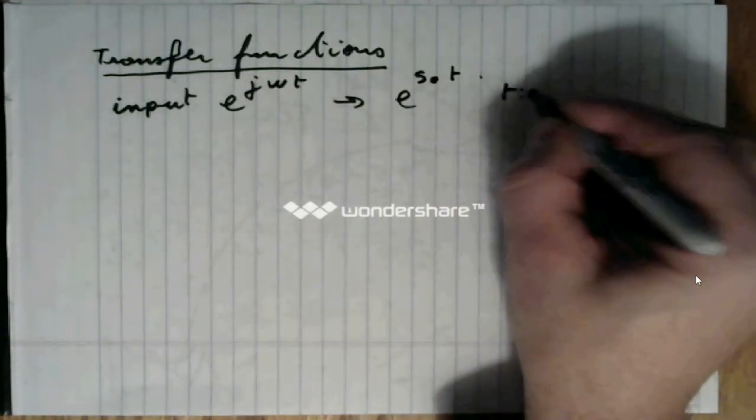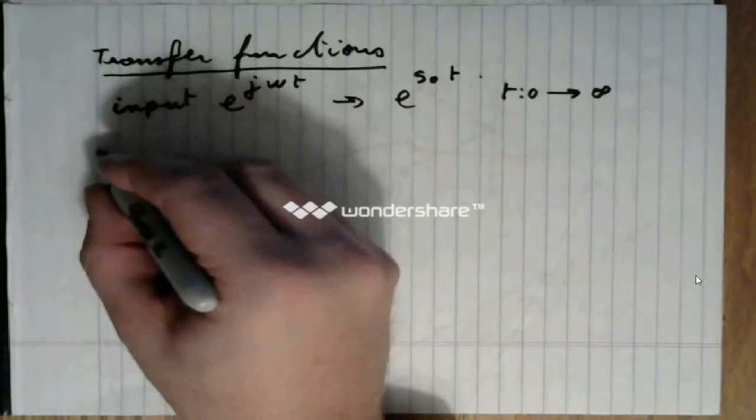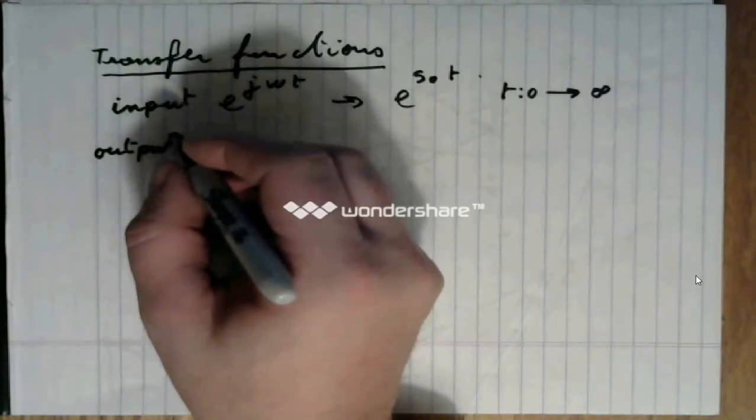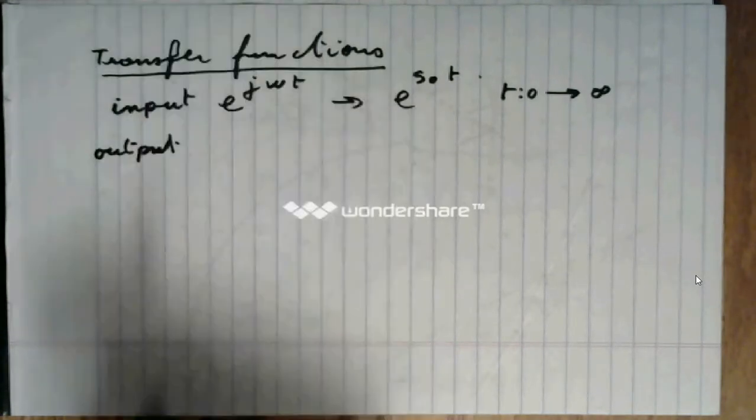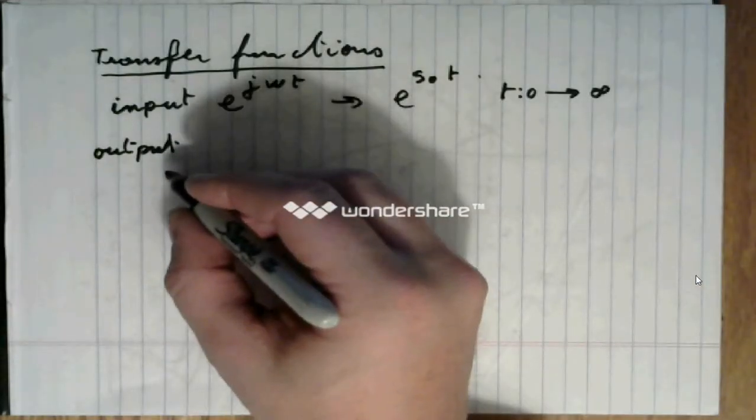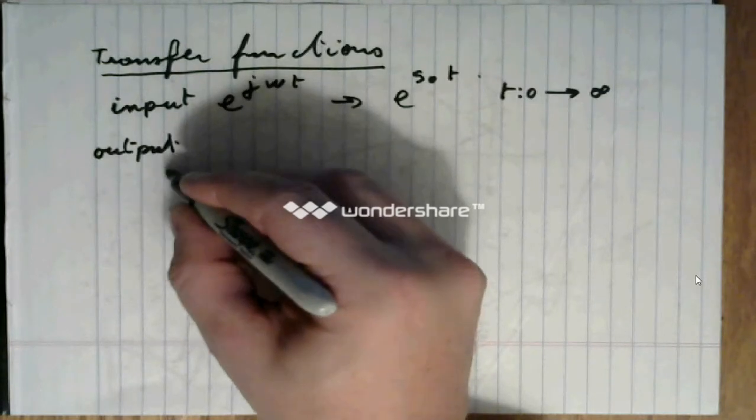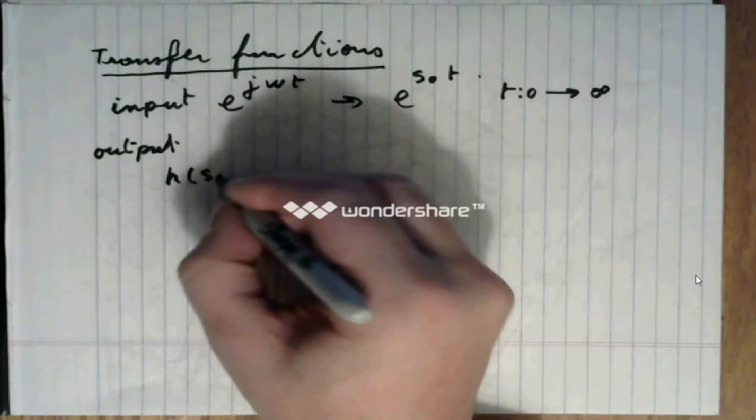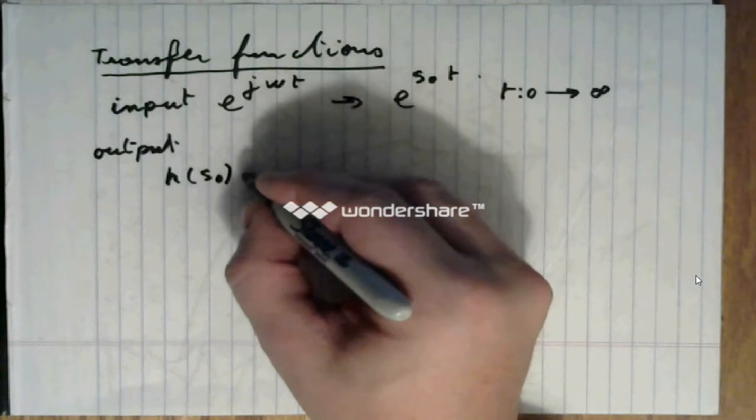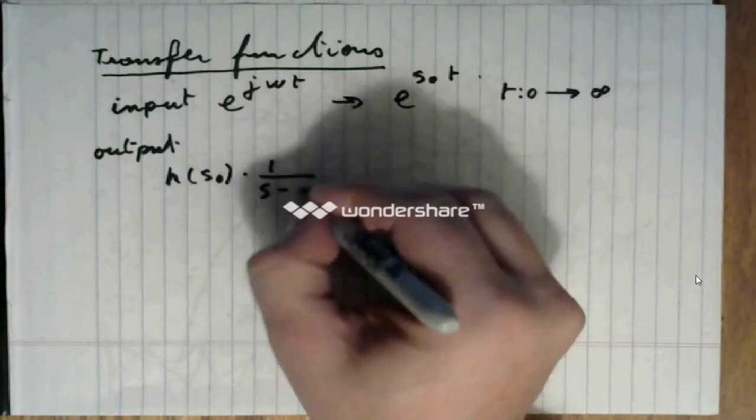What we will see is that at the output, the response of the system will be the same as before, which is that it will be h of s zero times 1 over s minus s zero.